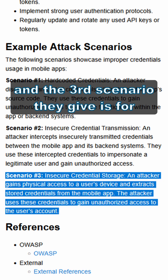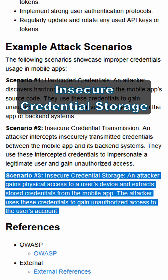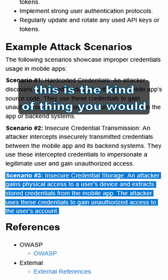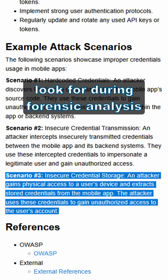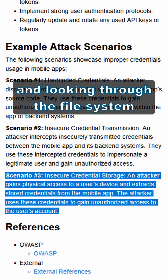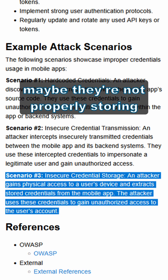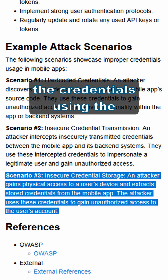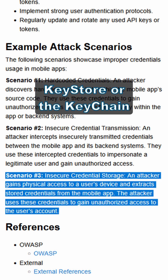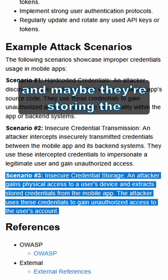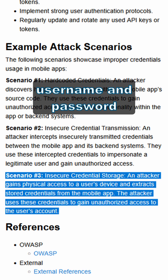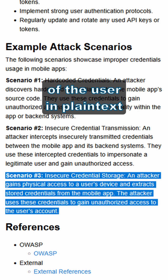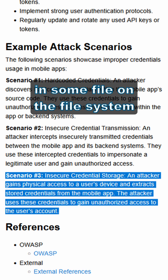The third scenario is insecure credential storage. This is the kind of thing you would look for when doing forensic analysis and looking through the file system of the device. Maybe they're not properly storing the credentials using the key store or the key chain, and maybe they're storing the username and password of the user in plain text in some file somewhere in the file system.